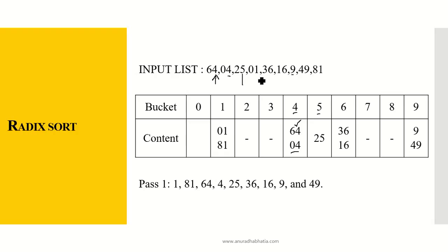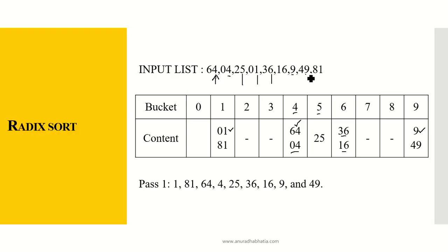01 — the least significant bit is 1, so it goes into bucket 1. 36 — the LSB is 6, so it goes into bucket 6. 16 goes into bucket 6. 9, treated as 09, goes into bucket 9. 49 — the least significant digit is 9, so goes into bucket 9. 81 — the least significant digit is 1, so goes into bucket 1. Make sure that as 64 came before 04, the order is preserved — do not jumble up the numbers as it will give you the wrong answer.